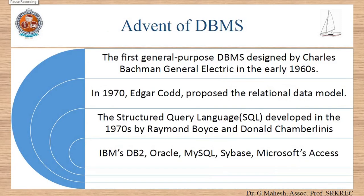To overcome the drawbacks of FPS, DBMS came into picture. The first general-purpose DBMS was designed by Charles S. Bachman at General Electric Company (GEC) in the early 1960s, and the database was called Integrated Data Store. In 1970, Edgar Codd proposed the relational model, in which data is represented as tables; the DBMS that follows the relational data model is called RDBMS. Other models include the hierarchical model, where data records are organized as a tree structure, and the network model, where objects are organized as a graph-like structure in which child nodes can have multiple parents.